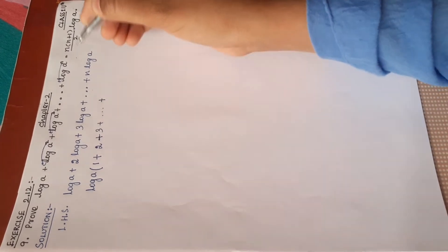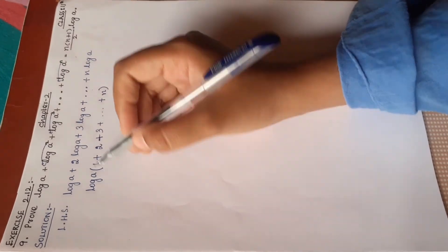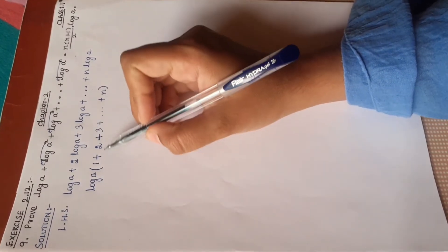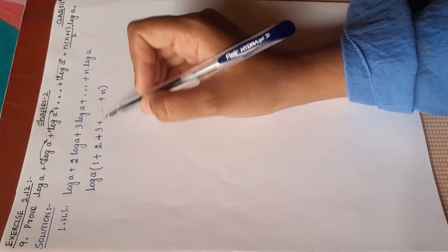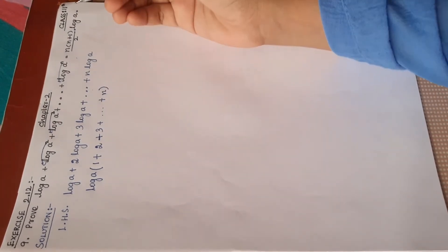Plus in the last term n. So we have log a × (1 + 2 + 3 + ... + n). We know the formula for sum of n natural numbers is n(n+1)/2.